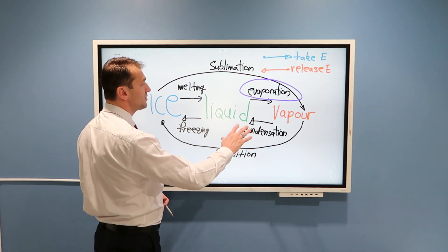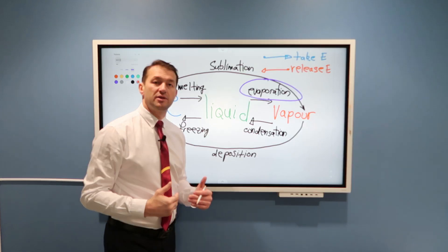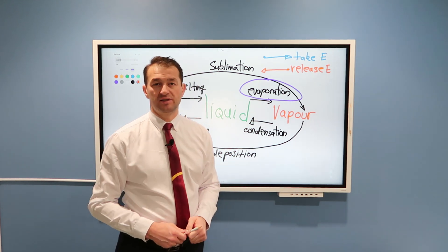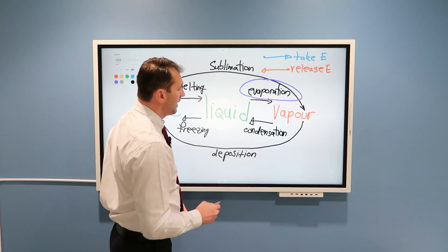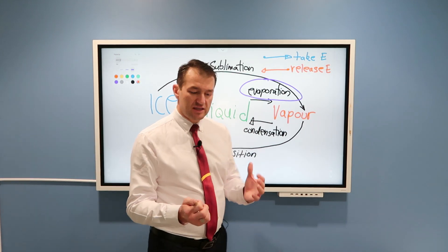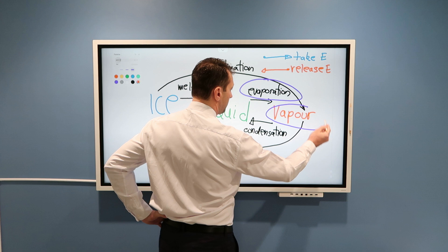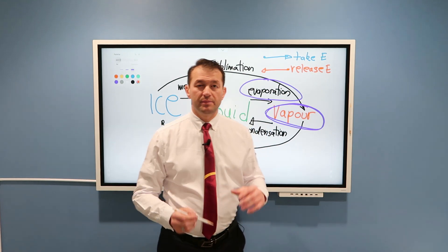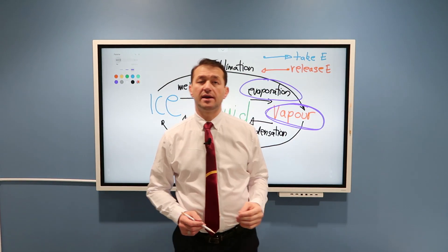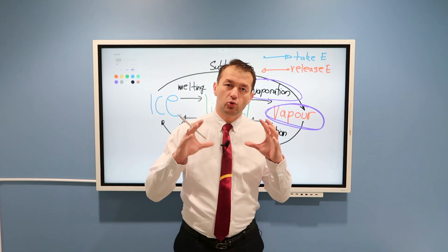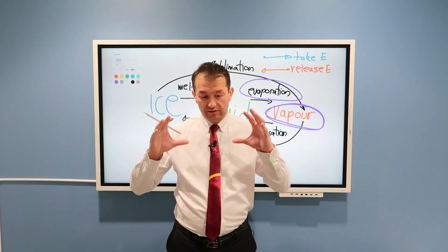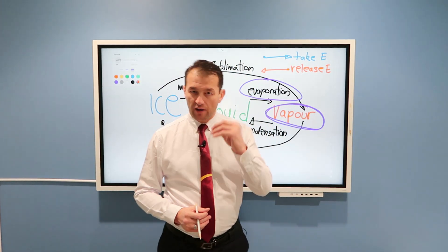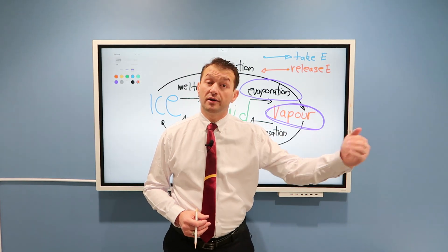We talked about phase changes — how certain phase changes take energy from the system, while other phase changes of water release energy to the system. That's all discussed in the previous video. Now, water enters the atmosphere as water vapor, and then all kinds of phase changes happen. Because these phase changes release or take energy, it is very important to know how much water vapor is in the atmosphere, because that's what fuels weather. That's one of the most important properties of our atmosphere in terms of weather and weather changes.